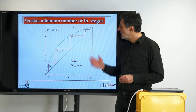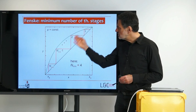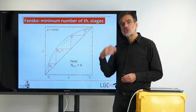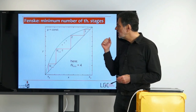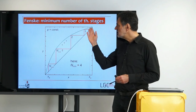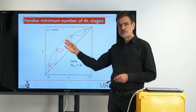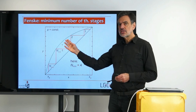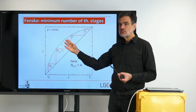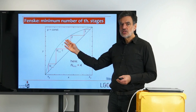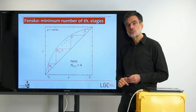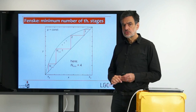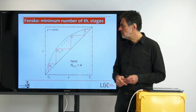The question is how one can derive a simple equation describing that. In order to achieve that, we set up the balance on one hand side, and on the other hand side we have to make some assumption about the equilibrium. We have to say something about a simple equation describing the equilibrium. As for single-stage distillation, we want to assume that the relative volatility is constant.